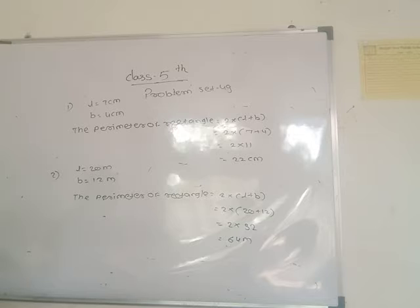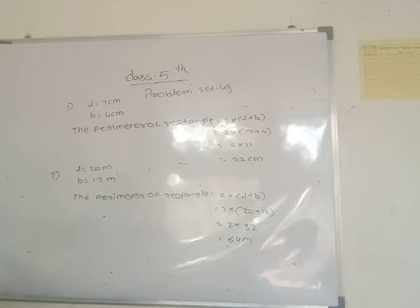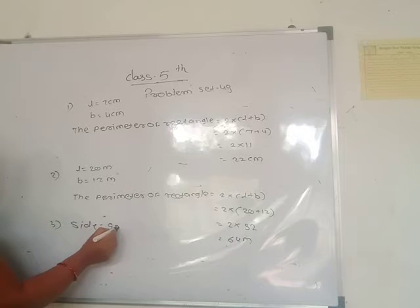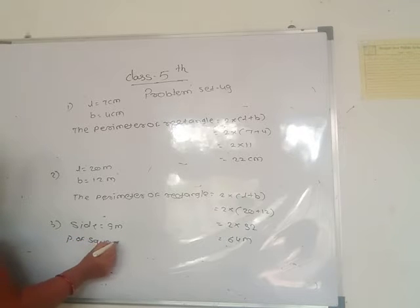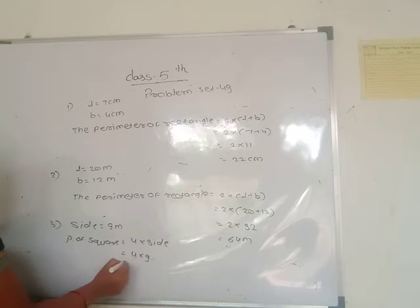Third example: Each side of a square is 9 meter long, find its perimeter. Side is given 9 meter. Perimeter of square = 4 × side = 4 × 9 = 36 meter.